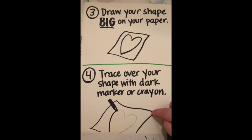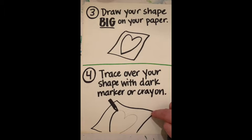The next step is you're going to trace over that pencil with something dark. It could be a dark crayon or dark marker. I used a Sharpie, but I know not everybody has one. You can use anything dark, but you're going to want your shape to have a nice dark outline.